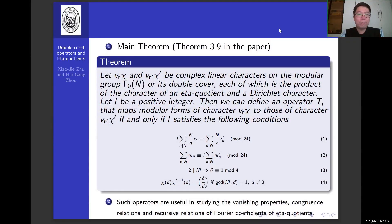Here is our main theorem, that is theorem 3.9. We list all possible double coset operators which map spaces of modular forms of one multiplier system to those of another multiplier system.